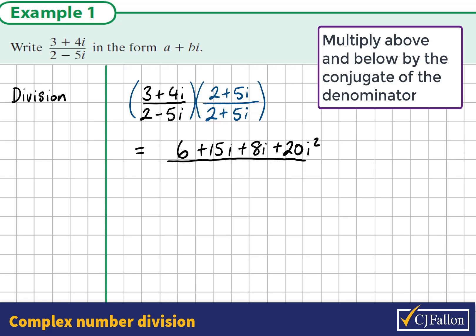Now remember that i squared is negative 1. So this is 20 multiplied by negative 1, which becomes negative 20. It becomes a real number because i squared is negative 1.